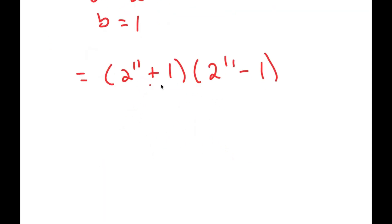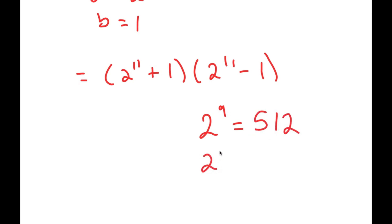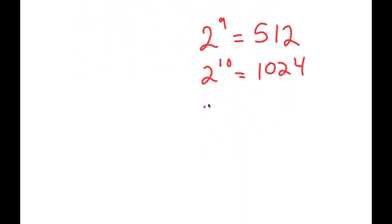Now, what is 2 to the power of 11? Well, 2 to the power of 9 is 512. 2 to the power of 10 is going to be double of 2 to the power of 9, which is double of 512, which is 1024. So, 2 to the power of 11 is double of 1024, which is 2048.